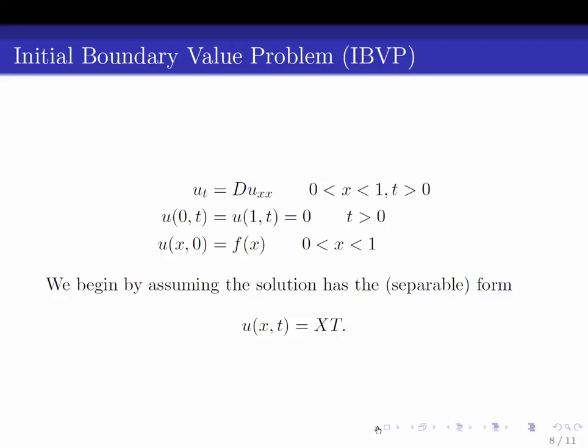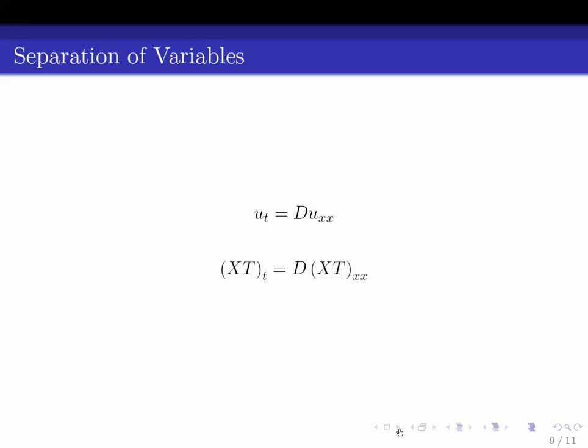I'm going to suppress the variables, so instead of always writing X of x and T of t, I'm just going to write this as X times T—capital X times capital T. We'll just keep in mind that X is a function of x and T is a function of t.